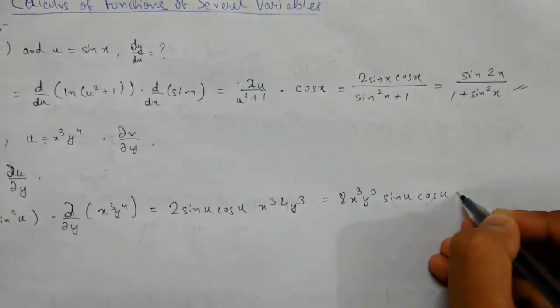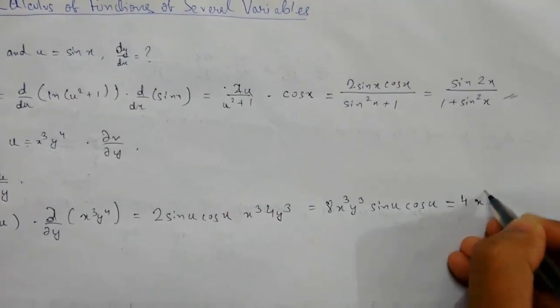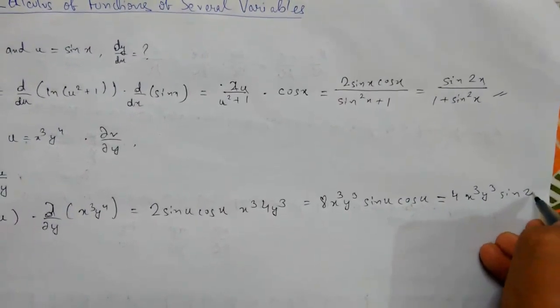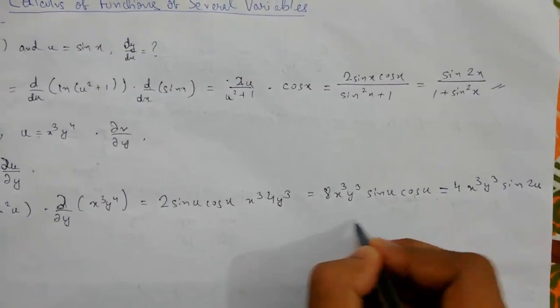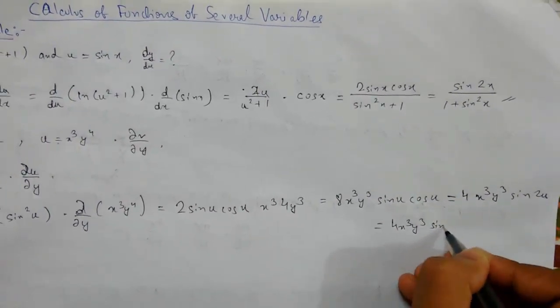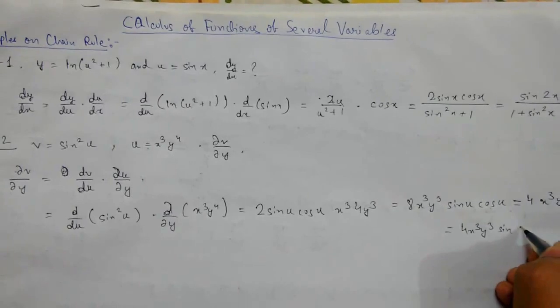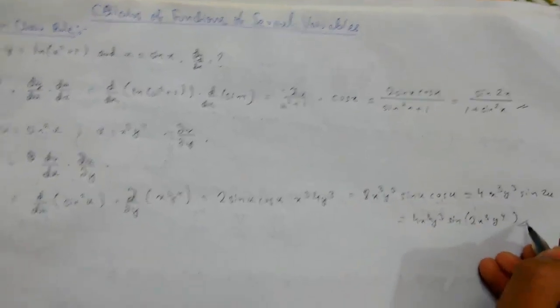This will be 4x·y³·sin(2u), where u is x·y⁴. So this is our answer.